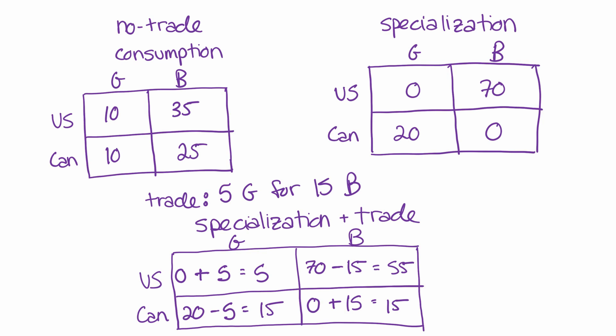And these numbers illustrate the point that I wanted to make, that being that even though the price of the trade was correct, and it could make both parties better off, the size of the trade actually wasn't proper to actually make both parties better off compared to what they were consuming before trade. And we can see that by looking at the no-trade consumption numbers. The US used to be consuming 10 guns and 35 butter. Now they're consuming five guns, so fewer guns, 55 butter, more butter.